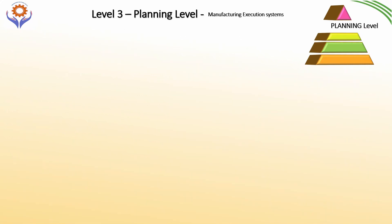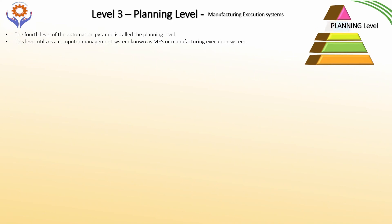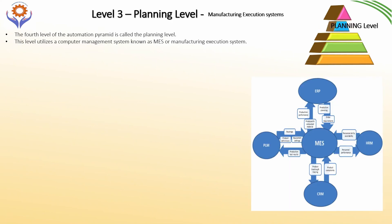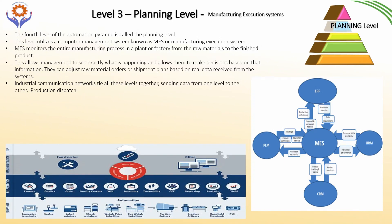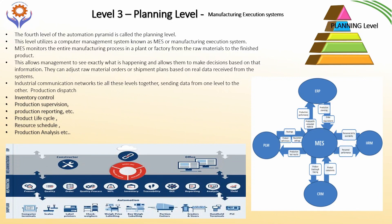Level three is the IT level, called the planning level or Manufacturing Execution System level. MES is a software-based solution used in manufacturing to monitor and control the production process on the shop floor. MES gathers real-time data, manages production lifecycle, tracks production performance, and calculates OEE. It monitors the entire manufacturing process from raw materials to finished product, covering inventory control, production supervision, reporting, product lifecycle, resource schedules, order quality, and analysis.